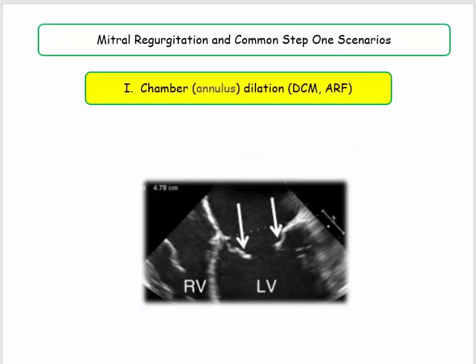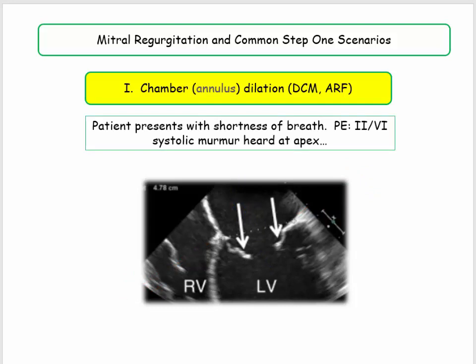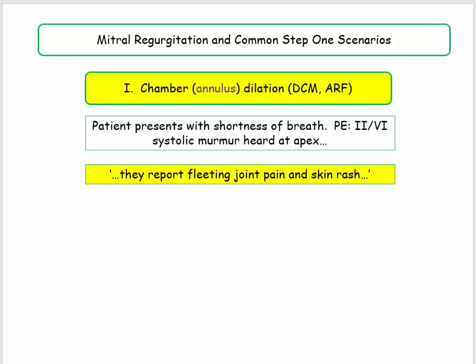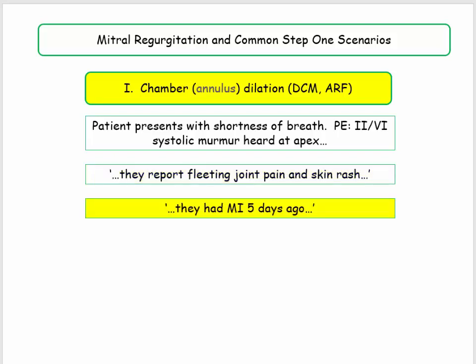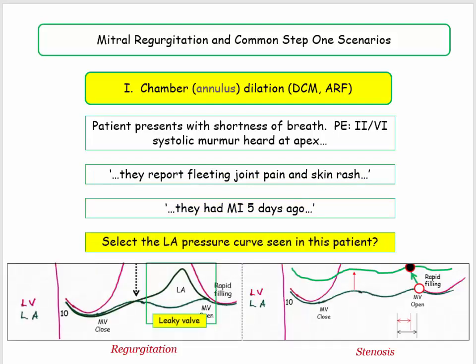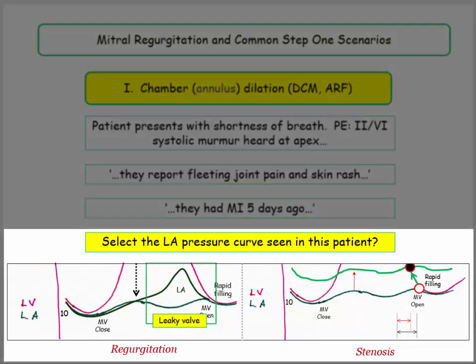Any disorder that enlarges the LV will stretch the mitral annulus and predispose to mitral regurgitation. Just like pulmonary hypertension and tricuspid regurgitation, questions involving LV chamber enlargement will likely include some description of a murmur at the apex. Scenarios include a patient with shortness of breath and a 2 over 6 systolic murmur at the apex, with qualifiers such as fleeting joint pain and skin rash of acute rheumatic fever. You need to be able to distinguish MS versus MR from the LA pressure curves.